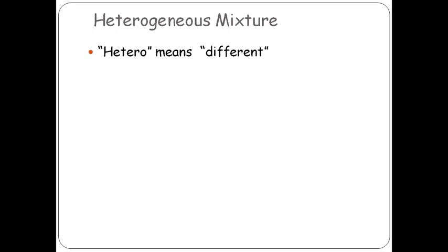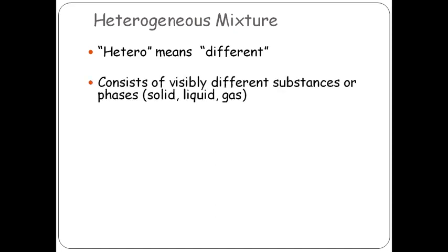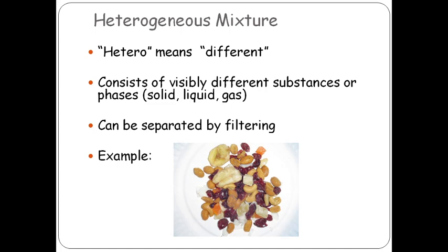Let's talk about Heterogeneous Mixture. The word 'hetero' itself indicates that it means different. It consists of visibly different substances or phases — may be solid, liquid, or gas. They can be separated by filtering or any physical method. For example, it is a mixture of solid compounds together that you can separate — it is a heterogeneous mixture.